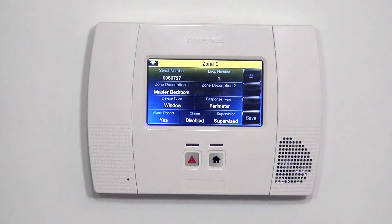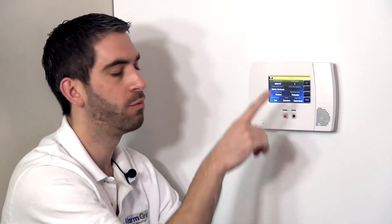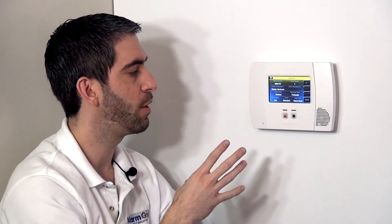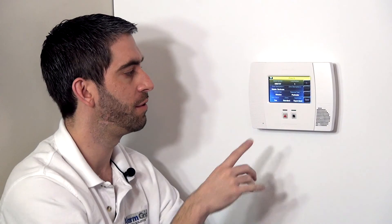Chime is disabled by default. On a window, I would prefer to know when the window is open and therefore you can highlight the chime sound that you want for when this window is open. We have it set to standard. When this window is open in the disarmed state, it'll beep beep beep, master bedroom window. So we have that beeping chime as well as the spoken words of the fault of the zone and that way we know when our windows are opening.